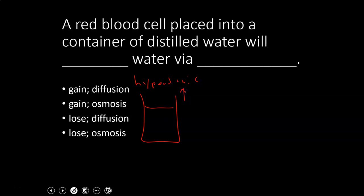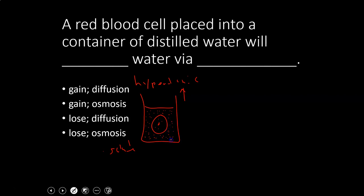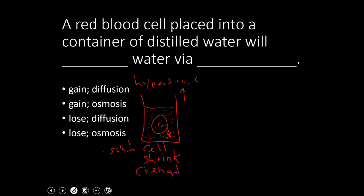In a hypertonic environment, the surrounding solution has more solutes than the cell. Because where there's a solute there's less water, there is actually less water outside than inside. So water will leave the cell and the cell will shrink — that process is called crenation. That's what happens to one of our cells placed in a hypertonic environment.